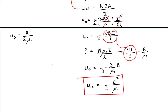Notice that this energy density is proportional to the square of the magnitude of the magnetic field. So if you double the magnetic field, you quadruple the energy density in that region of space. Or if you increase the magnetic field by five times, the energy density increases by 25 times. And even though this expression was derived for a solenoid, it turns out that the energy density anywhere that there is a magnetic field is given by this same expression.